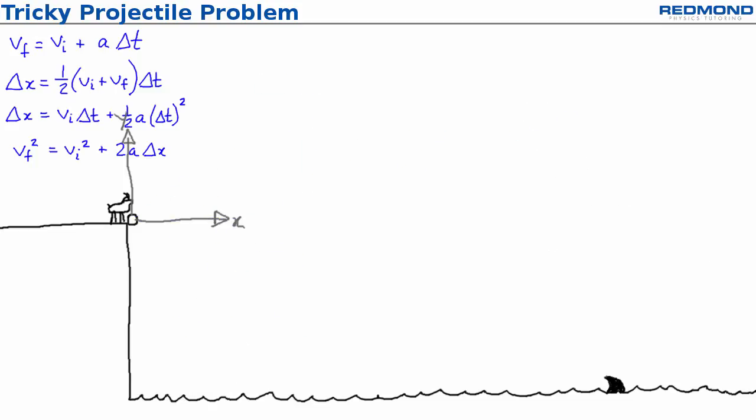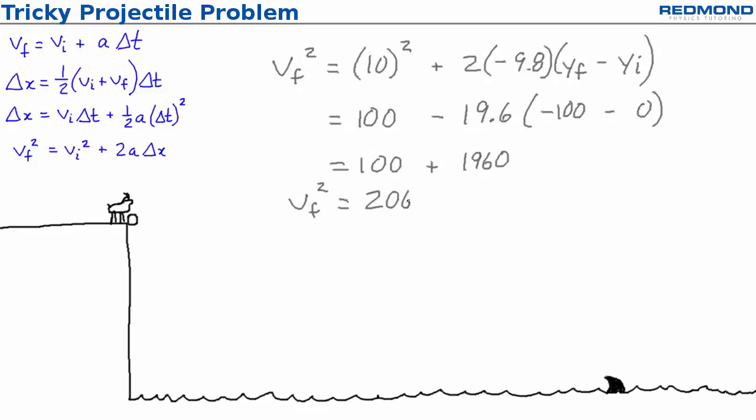Billy notices that he can use the fourth equation to solve for v f y directly since he knows v initial y, a y, and delta y. Substituting and simplifying gives v final y squared equals 2060. When Billy takes the square root, he gets 45.4 meters per second. But something seems weird. Why is that positive?